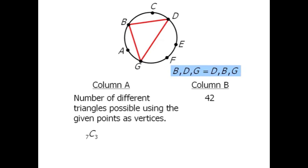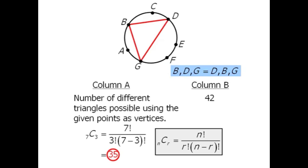Now to evaluate this, we'll apply the following formula. And when we plug our numbers in, we get a total of 35 different triangles.